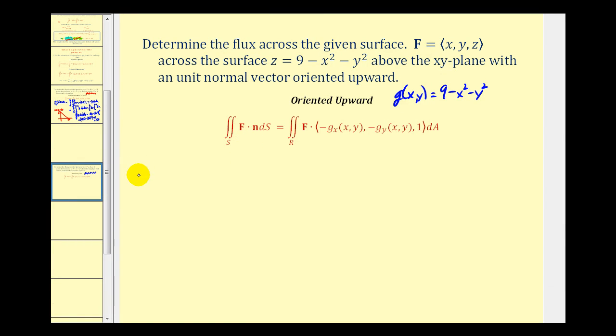So our surface integral is going to be equal to the double integral over the region R of this dot product. So for F, we're going to have x, y, and then for z, we're going to replace that with nine minus x squared minus y squared. Everything needs to be in terms of x and y.